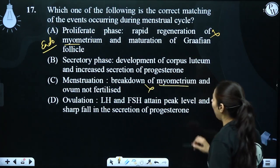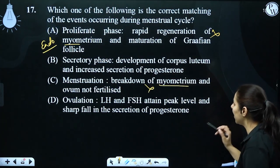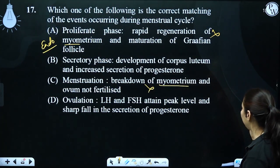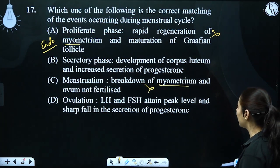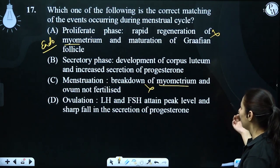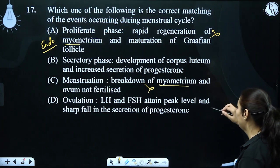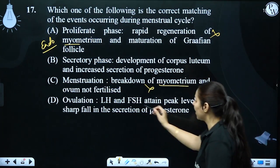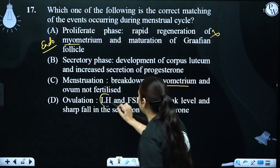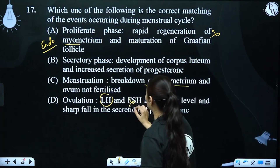Ovulation: LH and FSH attain peak level and sharp fall in secretion triggers ovulation. LH attains peak level — but FSH does not attain peak the same way, so that part is not entirely correct.